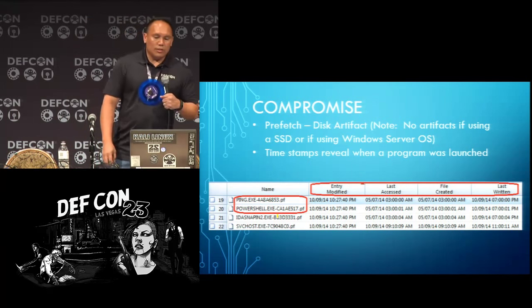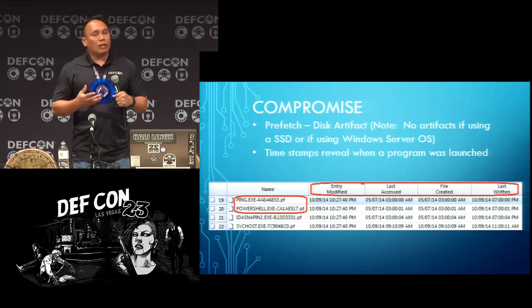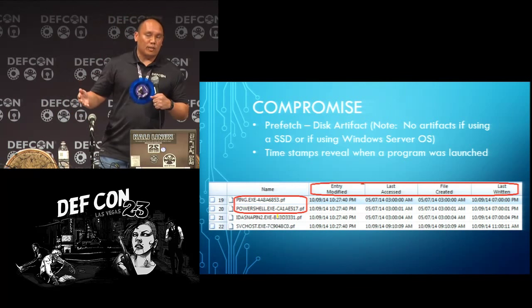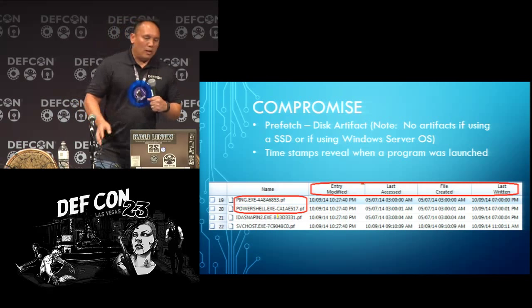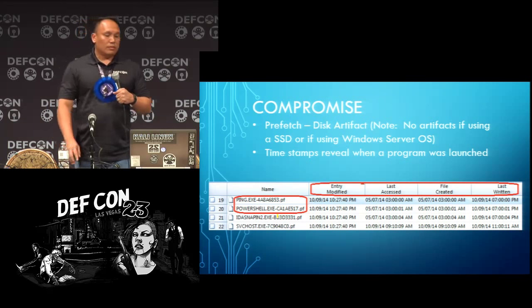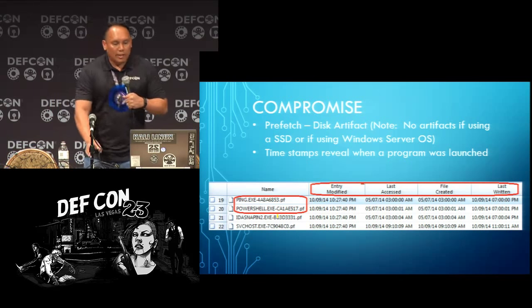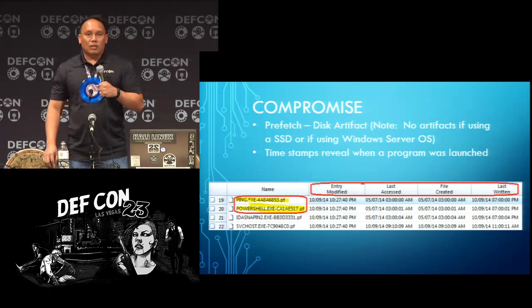For the compromise part two, you can look at the disk for something called a prefetch. Every time a computer program runs, a disk artifact is created in the prefetch for client systems. For server systems, they don't use prefetch. If you have an SSD on a client system, there will be no prefetch artifacts — there will be a prefetch directory, but no artifacts. In this example, this is what it looks like in NCASE for me when I look at it. You can see the MACE entries for the timestamps. If you look on the left side, you will see that ping was run along with PowerShell. That might be normal for some systems, but if your admin assistant is running these programs, that's bad.